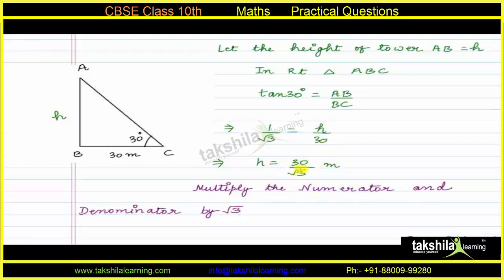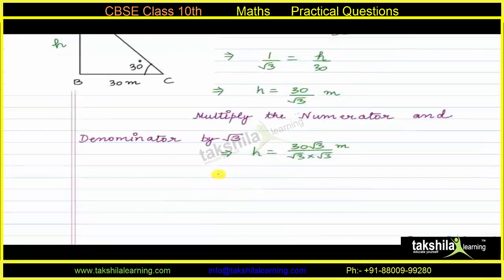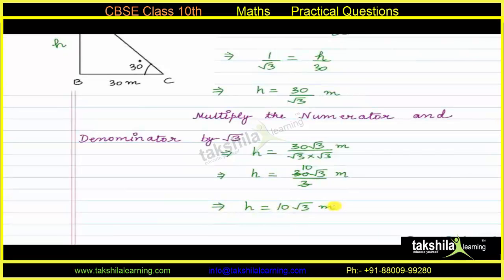We will rationalize the denominator by multiplying numerator and denominator by √3: H = 30√3 / (√3 × √3) = 30√3 / 3 = 10√3 meters. Therefore, the height of the tower is 10√3 meters. This is our answer.